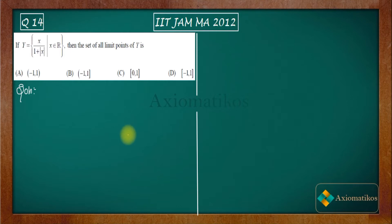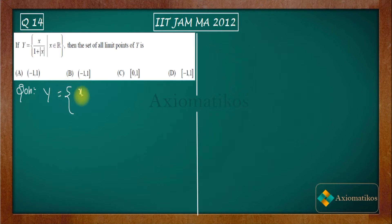Let us first have a look at this problem. It says: if Y is equal to the set which consists of elements x over (1 + |x|) such that x belongs to ℝ, then the set of all limit points of Y is — and these are your four options. Now let us start by writing Y properly: it contains x/(1 + |x|) such that x belongs to ℝ.